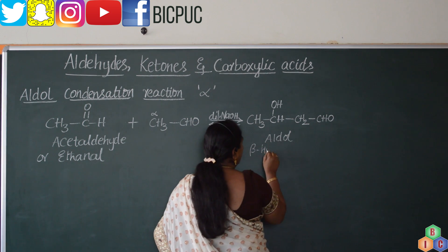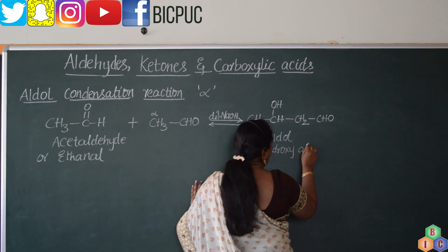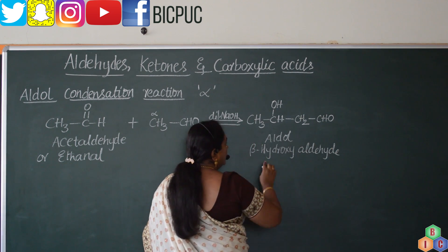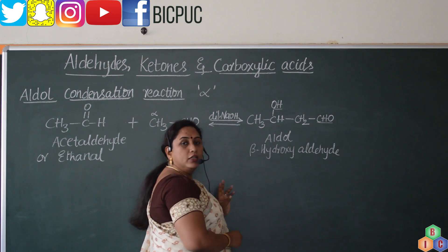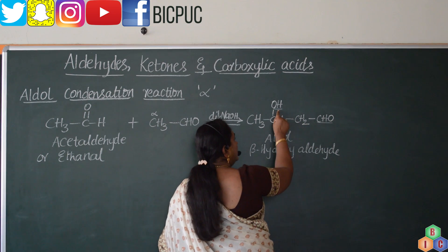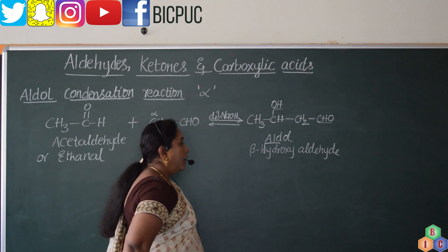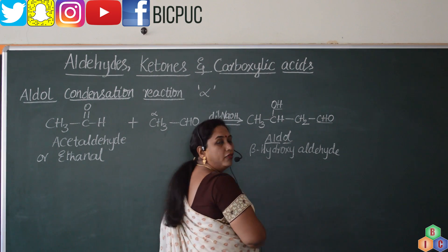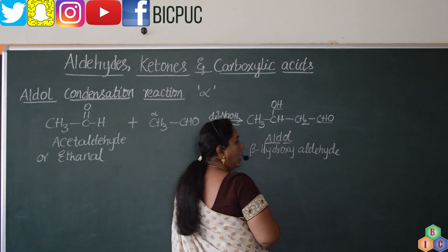The product is a beta hydroxy aldehyde, which we call by the name aldol. Why do we call it aldol? The same molecule contains two functional groups: there is the presence of an aldehyde and the presence of an alcohol. ALD stands for aldehyde, OL stands for alcohol. In the same molecule, we find the presence of both aldehyde and alcohol — therefore the name aldol.